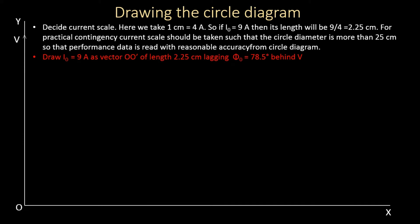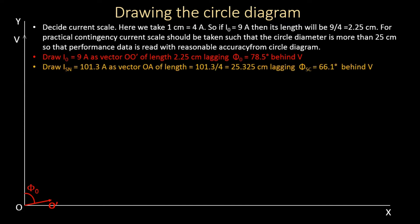We draw I0 as vector OO' from the origin, of length 2.25 centimeters, lagging the voltage by 78.5 degrees. We measure 78.5 degrees from the vertical axis and draw OO'. Next, we draw the normal short-circuit current of 101.3 amperes, named vector OA. Its length is 101.3 divided by 4, which equals 25.325 centimeters, lagging 66 degrees behind the voltage.